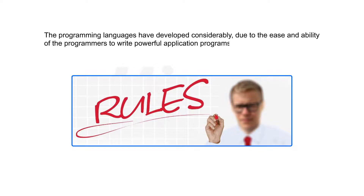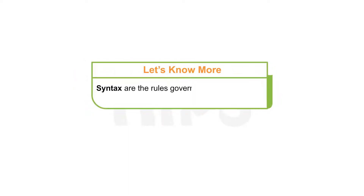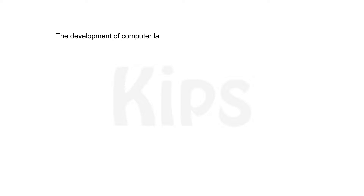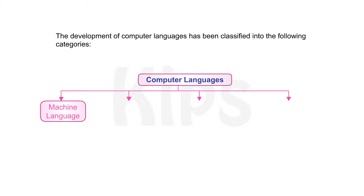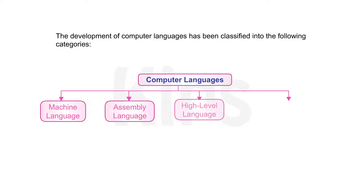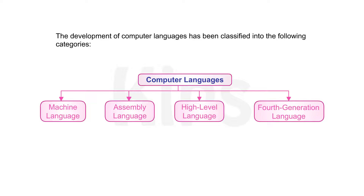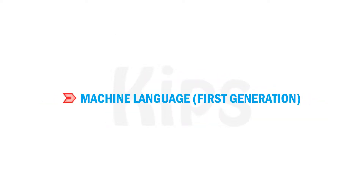Please know that syntax are the rules governing the formation of statements in a programming language. The development of computer languages has been classified into the following categories: first generation as machine language, second generation as assembly language, third generation as high-level language, and fourth generation language.